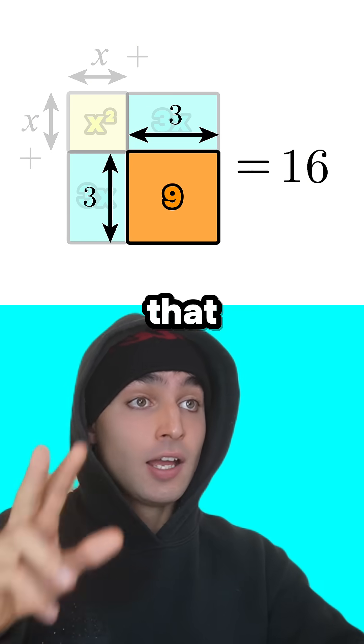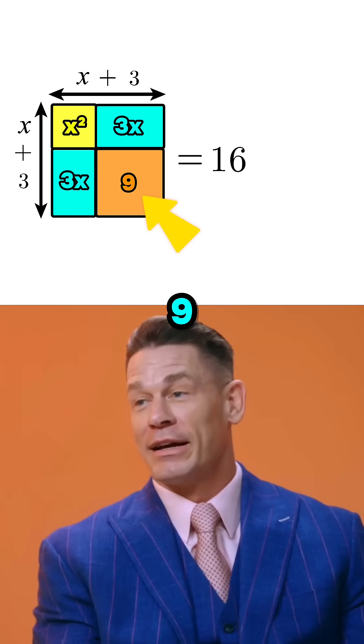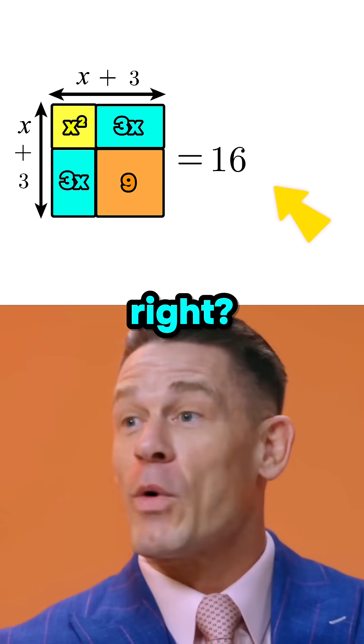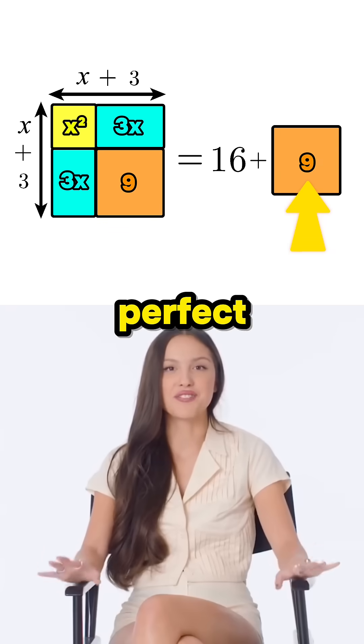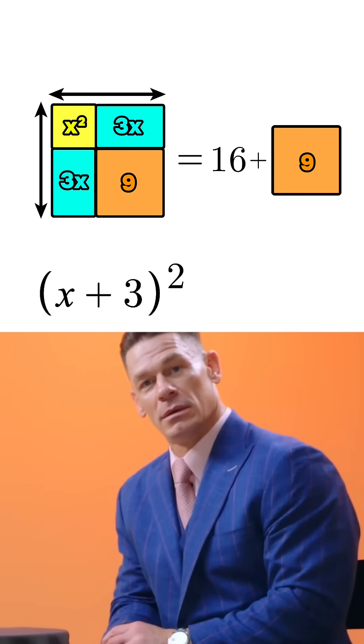Oh, so is that completing the square? Yes. Exactly. But since we added 9 on the left, what do we do on the right? Add 9 there too. Perfect. So now our equation is x plus 3 squared equals 25.